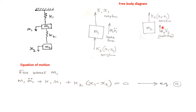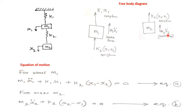We also represent the inertia force of mass M2, which acts upward since M2 is moving downward. The inertia force is M2·Ẍ2. The equation of motion for mass M2 is: K2·(X2 − X1) + M2·Ẍ2 = 0. To derive the equation of motion, we use D'Alembert's principle: the net force acting on the system plus the inertia force equals zero.